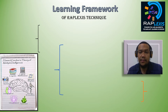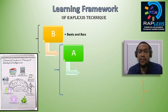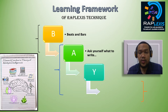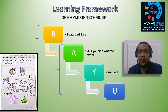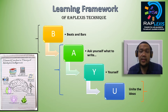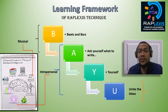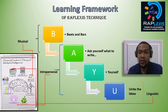The learning framework of Replexis technique is designed based on Howard Gardner's theory of multiple intelligences. To do Replexis, first you have to find the beat and bars. Second, after listening to the rap beat, you have to ask yourself what to write, and make sure that the lyrics reflect themselves or relate to their life. Lastly, after they get everything, they have to unite all the ideas by using rhyme words, and use RhymeZone as a platform in their learning. In the first stage they develop musical intelligence, in the second and third parts intrapersonal intelligence, and lastly when they unite ideas they develop linguistic intelligence.